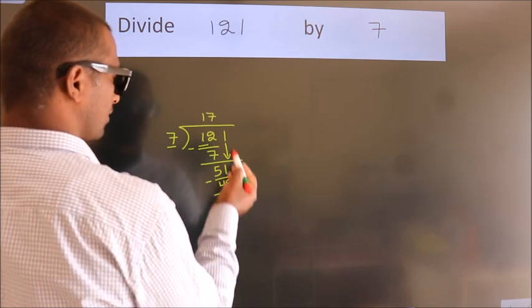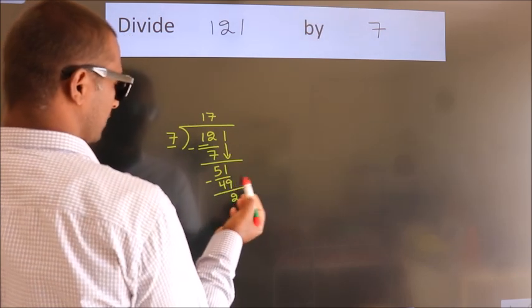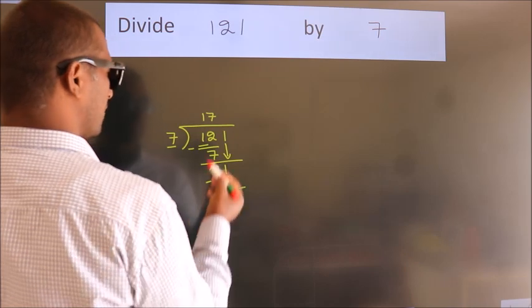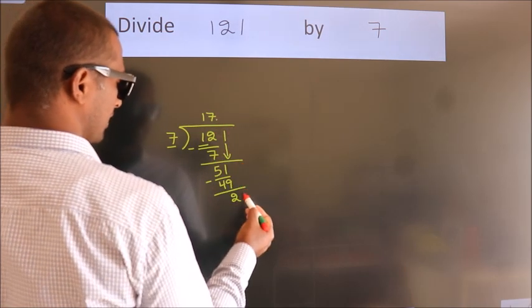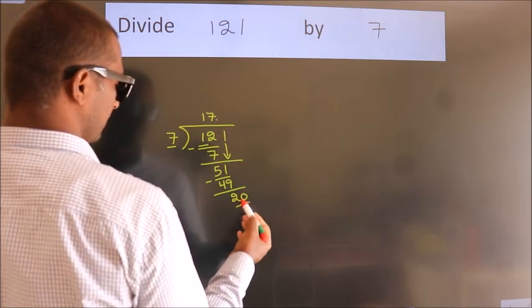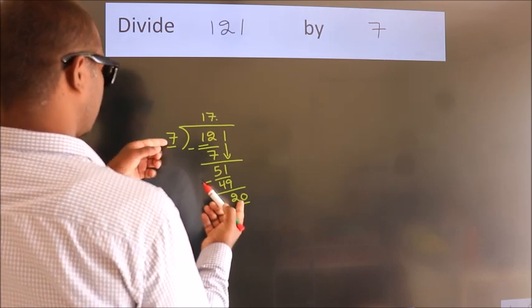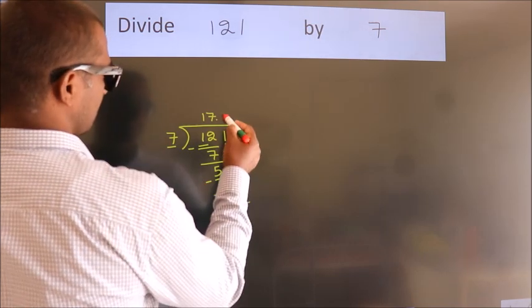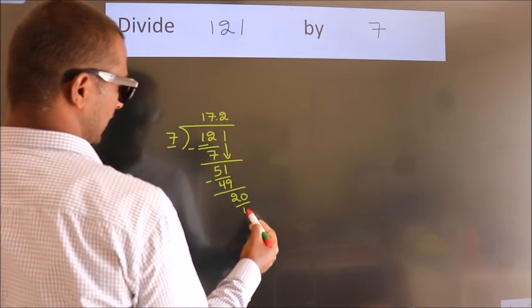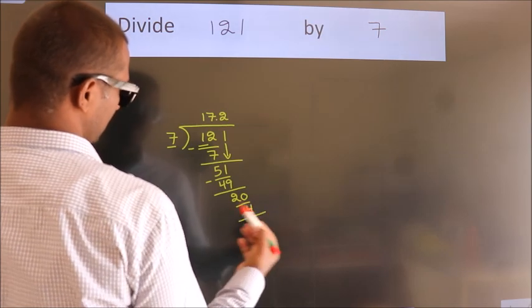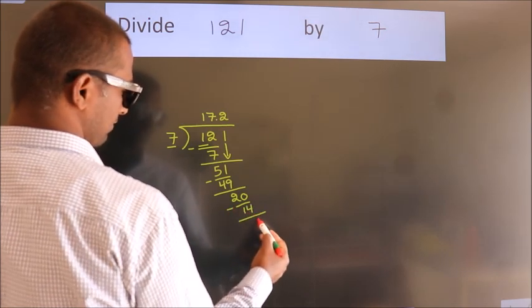After this, no more numbers to bring down. So, what we do is we put dot, take 0. So, 20. A number close to 20 in 7 table is 7 twos 14. Now, we subtract. We get 6.